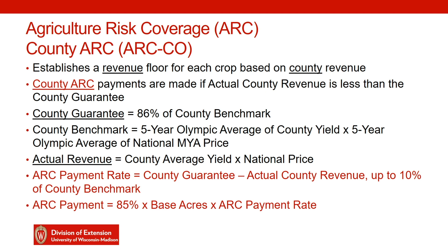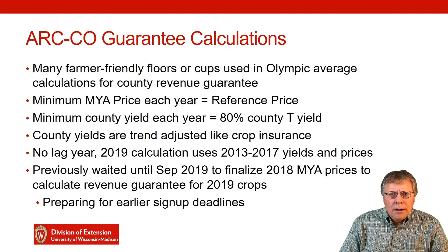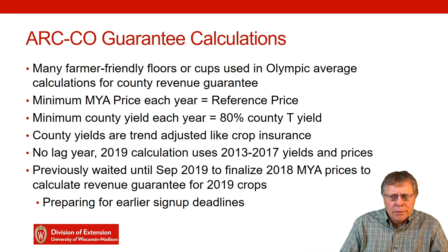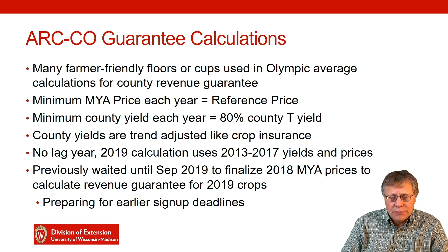We'll work through an example of the process, but first let's talk about some of the tweaks they've done to the program. Some of these were in place before, but they've made them even more farmer-friendly. There are lots of floors and caps in the calculation of the county revenue guarantee and for the Olympic averaging.